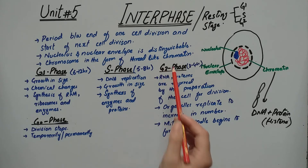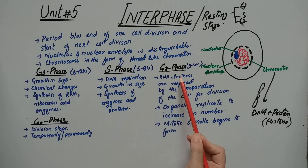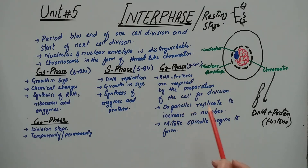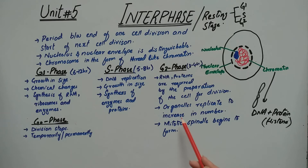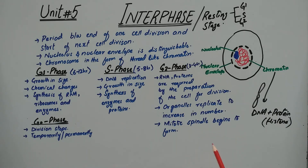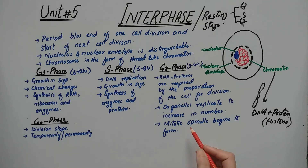When S phase is complete and DNA is replicated, the cell enters G2 phase. In G2 phase, RNA and proteins are required to prepare the cell for division. So RNA and proteins will be formed. Also, organelles replicate to increase in number — including endoplasmic reticulum, Golgi bodies — their size doubles as the cell prepares to divide.